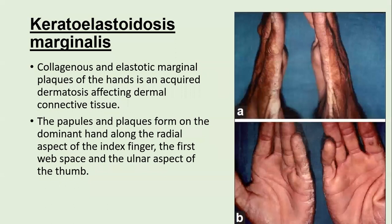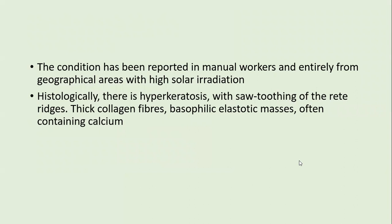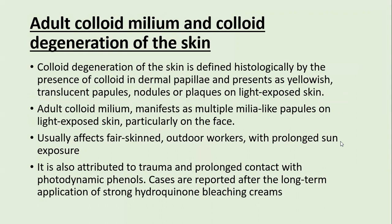Keratoelastoidosis marginalis is the collagenous and elastotic marginal plaques on hands — an acquired dermatosis affecting dermal connective tissue. Papules and plaques form on the dominant hand along the radial aspect of the index finger, first web space, ulnar aspect of the thumb, and little finger. It is reported in manual workers from geographical areas with high solar irradiation. Histologically, it is characterized by hyperkeratosis, thickened collagen fibers, elastotic degeneration, and often calcification.